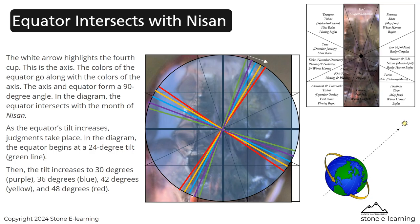The white arrow highlights the fourth cup — this is the axis. The colors of the equator go along with the colors of the axis. The axis and equator form a 90-degree angle. In the diagram, the equator intersects with the month of Nissen. As the equator tilt increases, judgments take place. The equator begins at a 24-degree tilt (green line), then the tilt increases to 30 degrees (purple), 36 degrees (blue), 42 degrees (yellow), and 48 degrees (red).